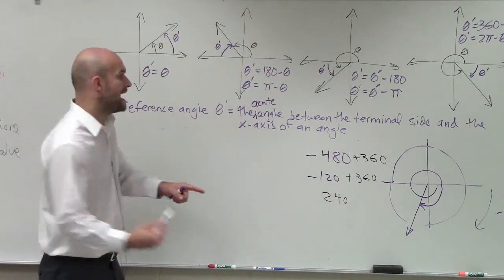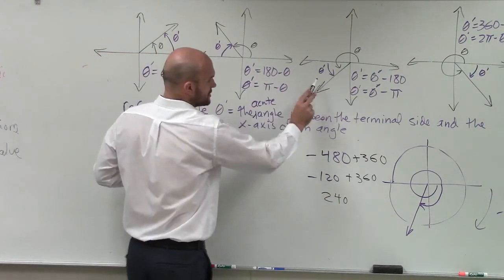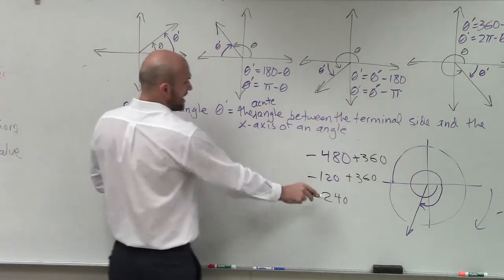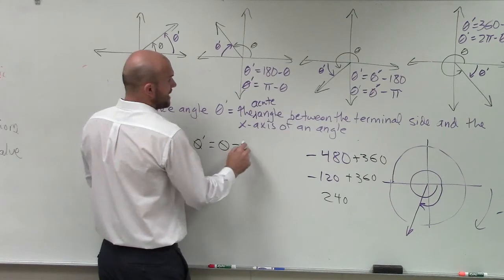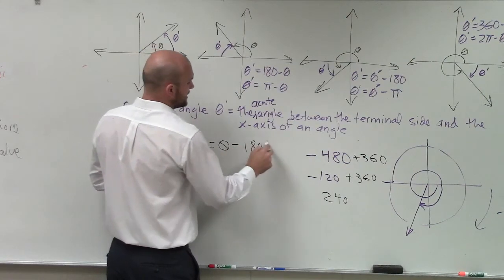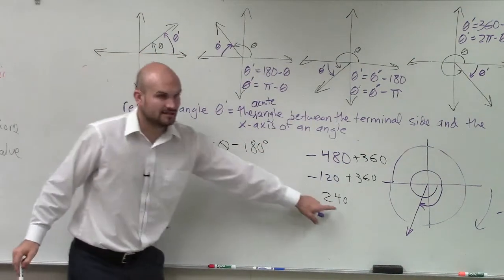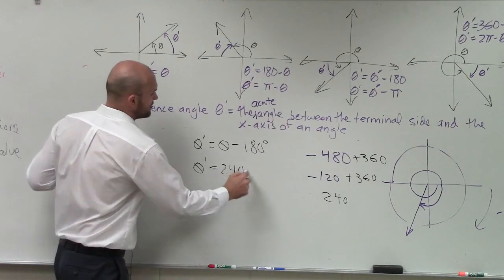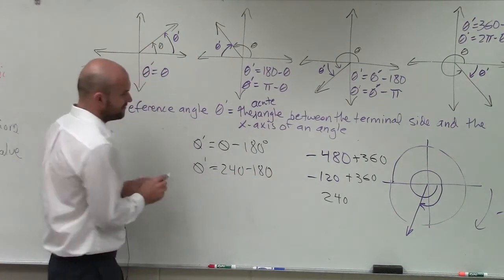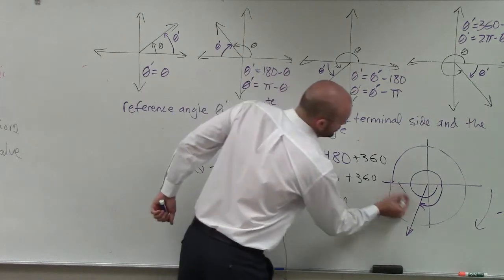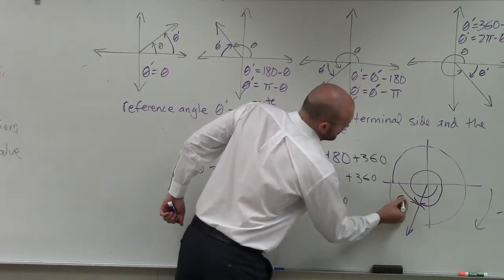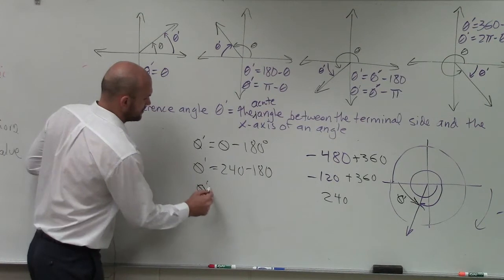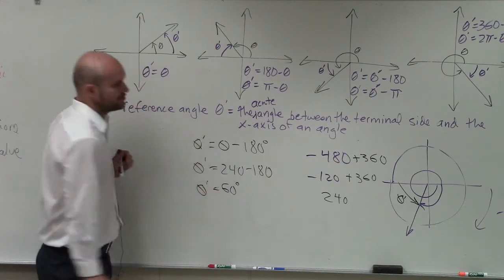So now it's in the third quadrant. I can say theta prime equals theta minus 180 degrees. My theta is 240, so theta prime equals 240 minus 180. Therefore, my reference angle is that angle right there, which is 60 degrees.